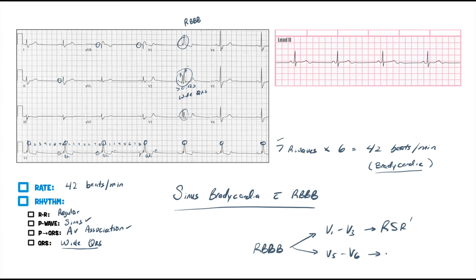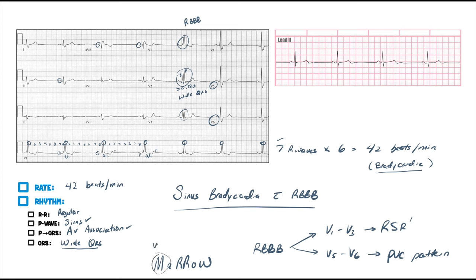We'll go over this stuff a little bit later. If you look in V5 and V6, you have this ST segment depression. This is something you look for in V5 and V6. A nice little way that I like to remember it is you can remember MARROW — so M is going to be in the front of this word, right? That's V1 to V3.